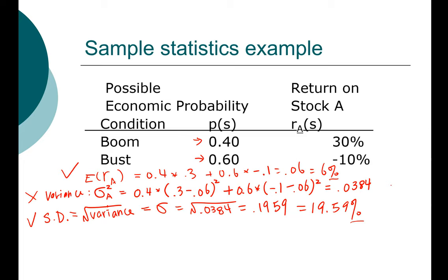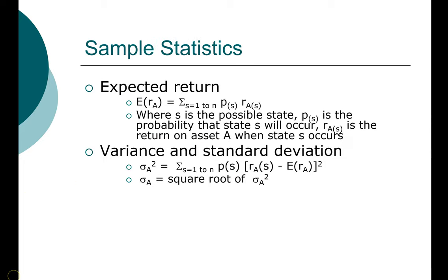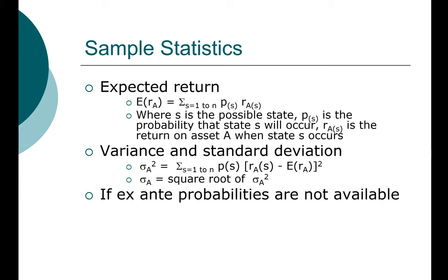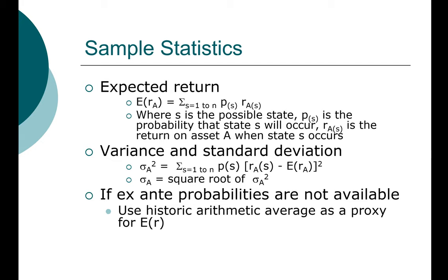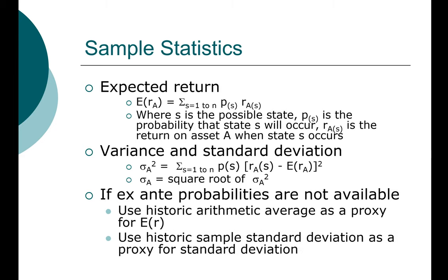To summarize: if we do not have additional information — meaning no probability available — we simply use the historic arithmetic average as the expected return and the historic sample standard deviation for the future standard deviation, as covered in the last module. In the next module, we'll continue the discussion of how we can use expected return and standard deviation to further understand the relationship between risk and return. See you next time.